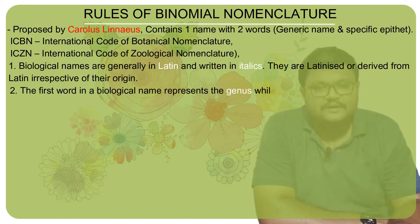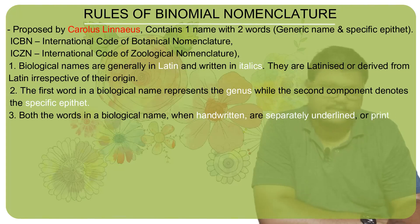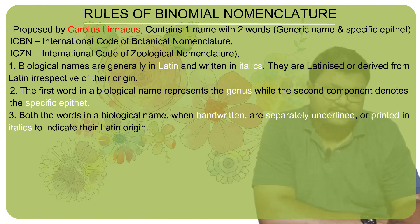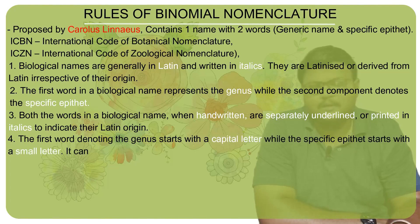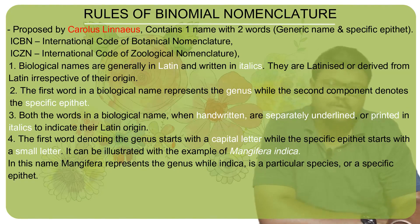Rule number two: in a biological name, the first word should be the genus name and the second should be the specific epithet. Rule number three: when biological names including the genus name and specific epithet are written, they should be separately underlined; when printed, they should be in italics to indicate their Latin origin. Rule number four: the first word denoting the genus name should start with a capital letter, and the second word denoting the specific epithet should start with a small letter.